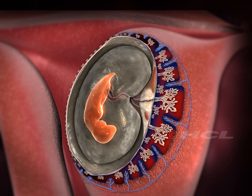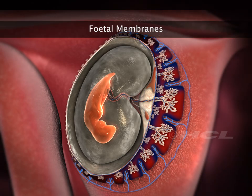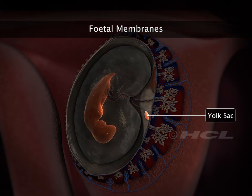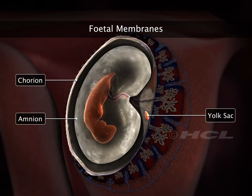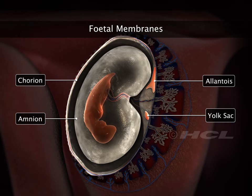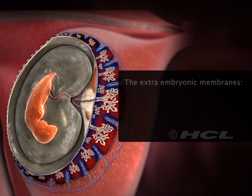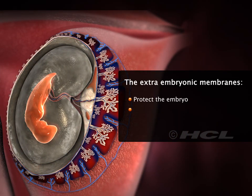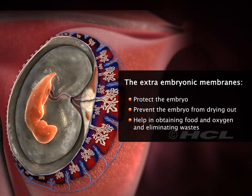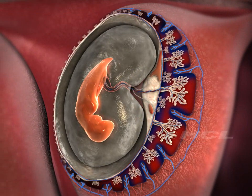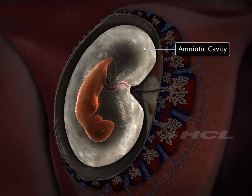The developing embryo is protected by fetal membranes — the yolk sac, amnion, chorion, and allantois. They are not a part of the embryo and are called extra-embryonic membranes. The extra-embryonic membranes protect the embryo, prevent it from drying out, and help in obtaining food and oxygen and eliminating wastes.